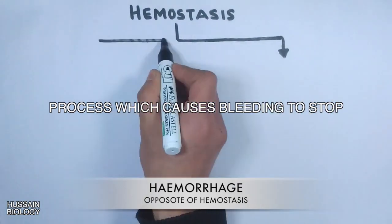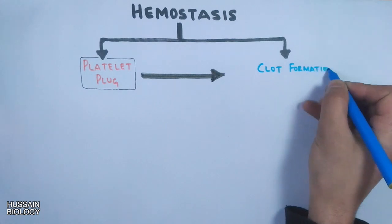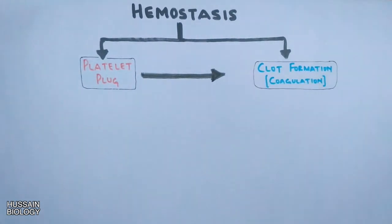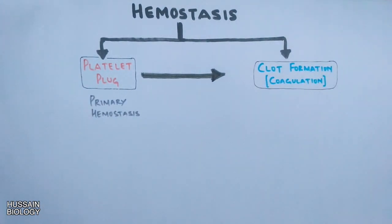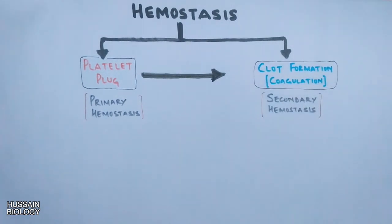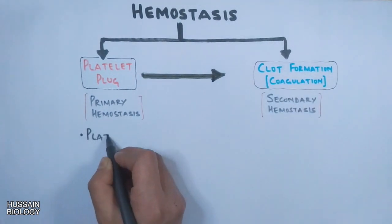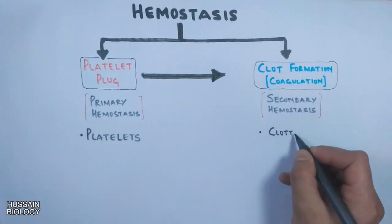This process involves two processes: platelet plug formation and clot formation. Although both these processes occur simultaneously, in order to make it understandable we will discuss these two processes separately. Platelet plug formation is the primary hemostasis while clot formation is the secondary hemostasis. Platelet plug formation is aided by the platelets in the blood, while clot formation is aided by the blood clotting factors.